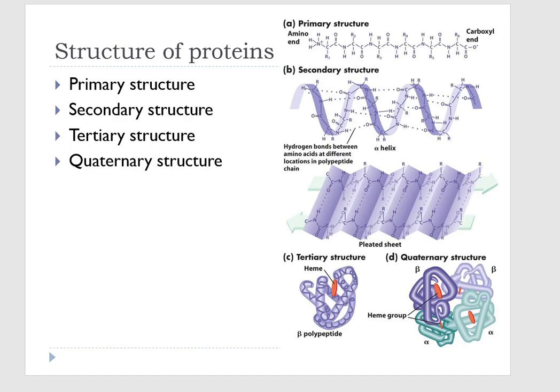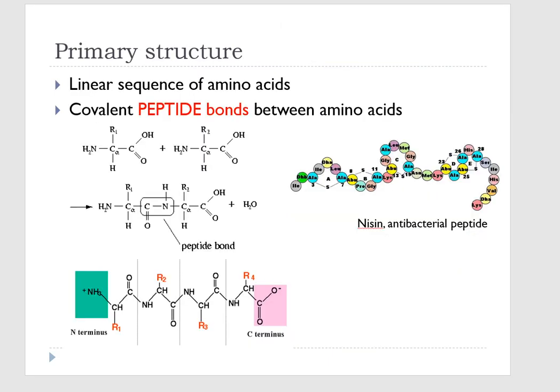Amino acids are linked together via peptide bonds and assembled in several stages to form different structures of proteins. There are four main protein structures: primary structure, secondary structure, tertiary structure, and quaternary structure. Let's start with the primary structure — it is the linear sequence of amino acids linked via peptide bonds.